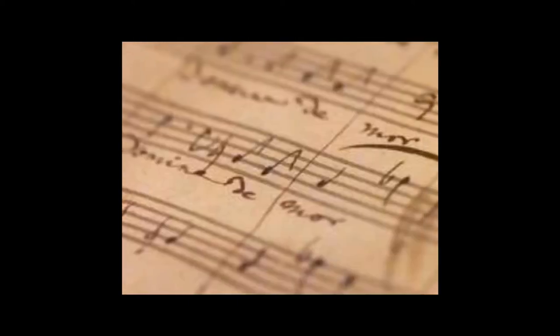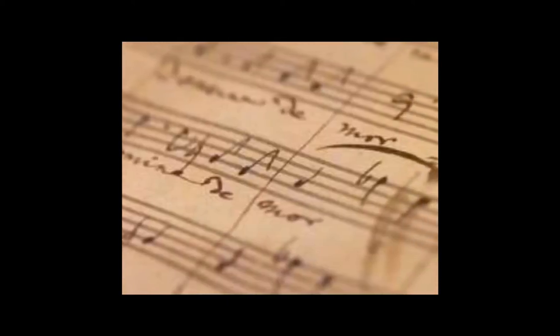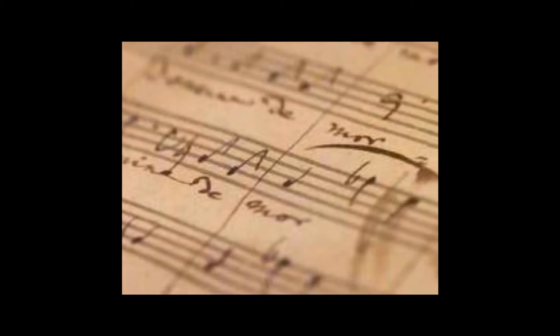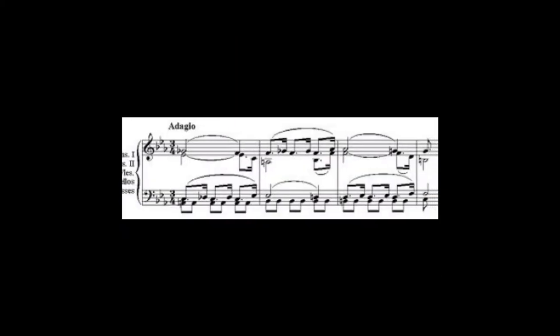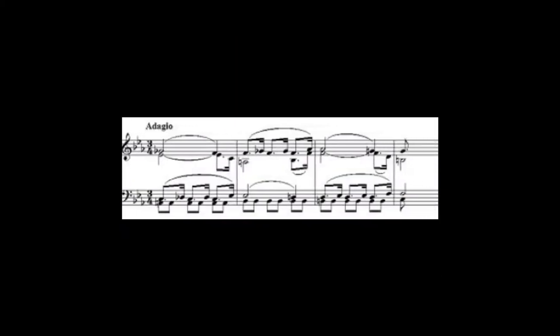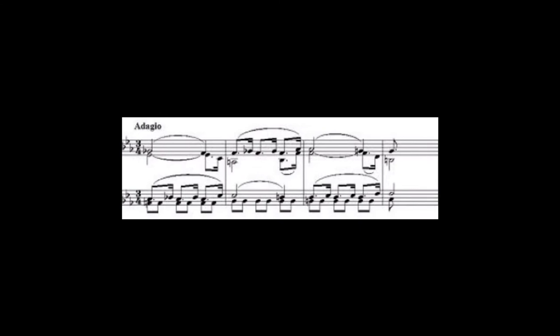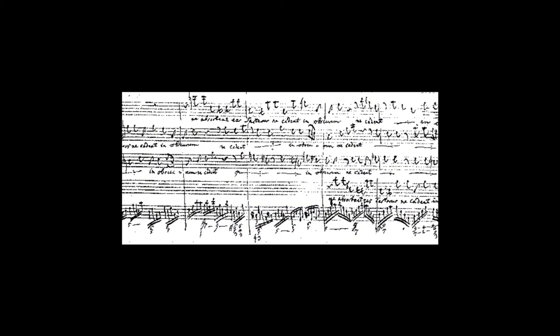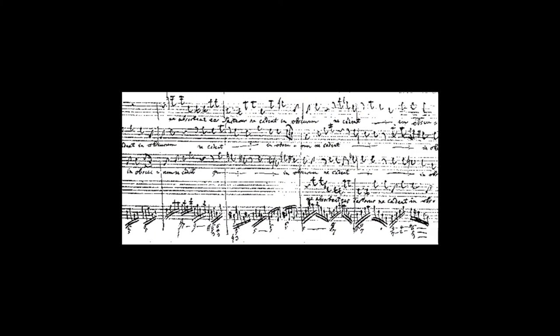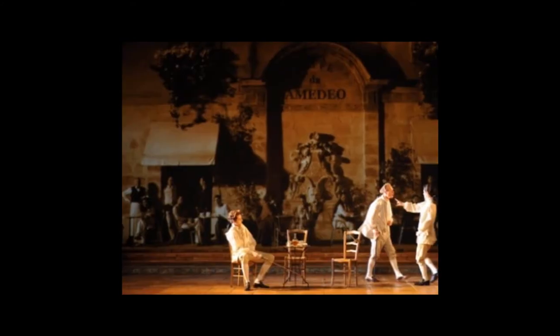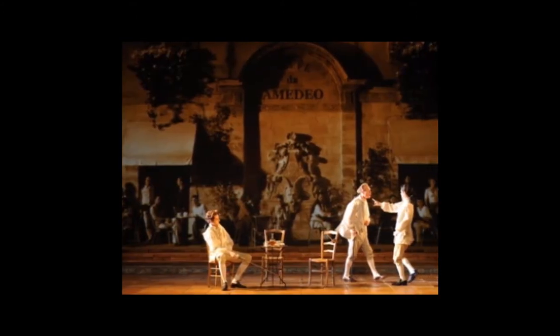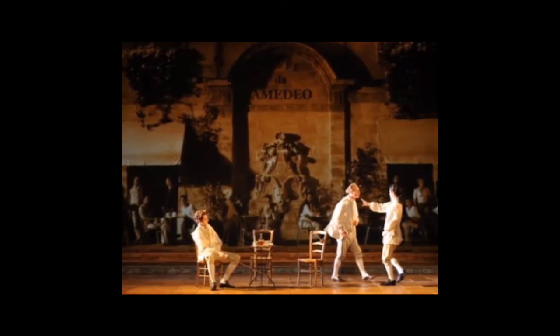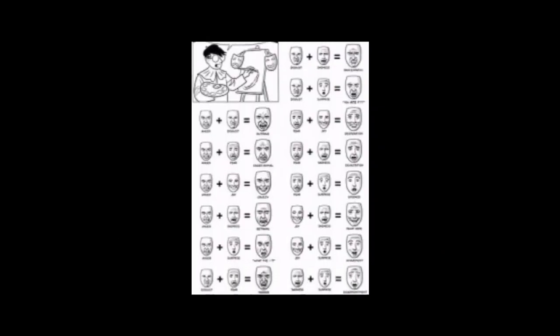When Mozart discovered the contrapuntal art, it impressed him greatly, and he used these techniques in almost all of his later works. He combined underlying phrase structures to form unified musical phrases that contained harmony and tonal design. He also went on to use counterpoint in his operas, using these techniques to depict his characters' emotions and personality through the vocal lines.